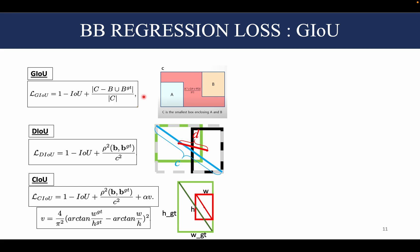An improvement over GIoU was DIoU, or distance IoU, which replaces this term with this term. And this term corresponds to minimizing the distance between the center points of the two boxes.